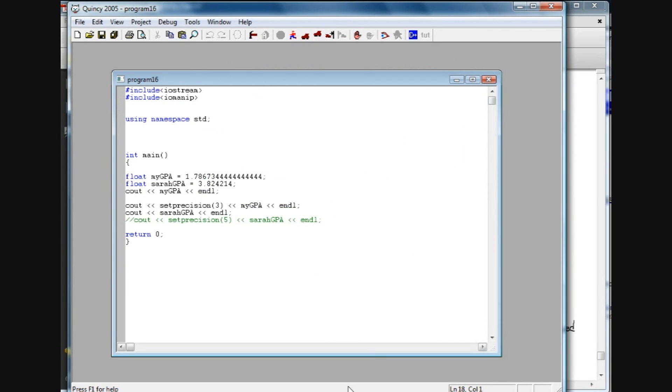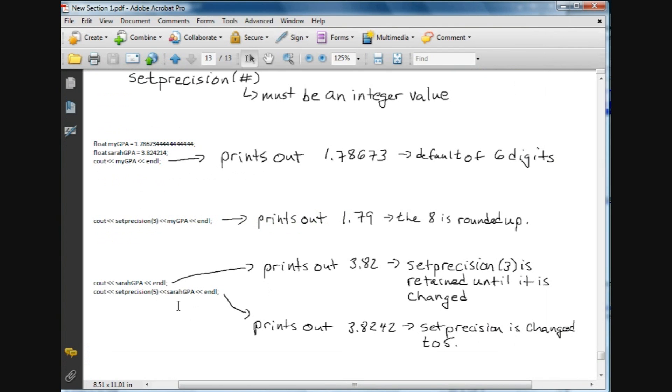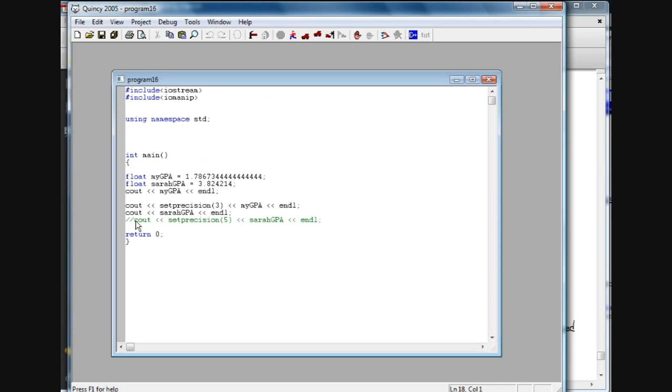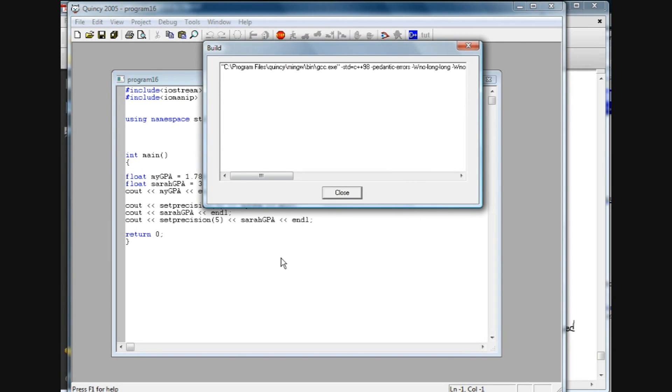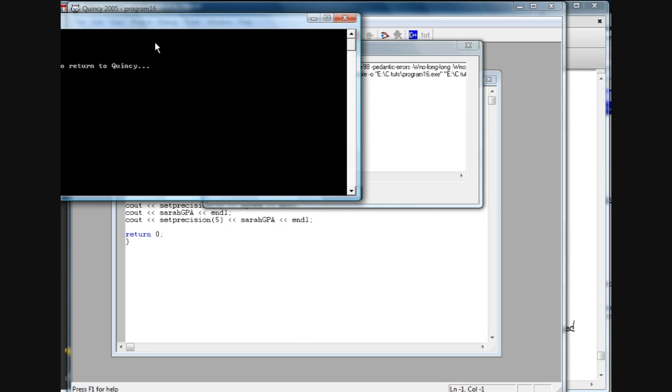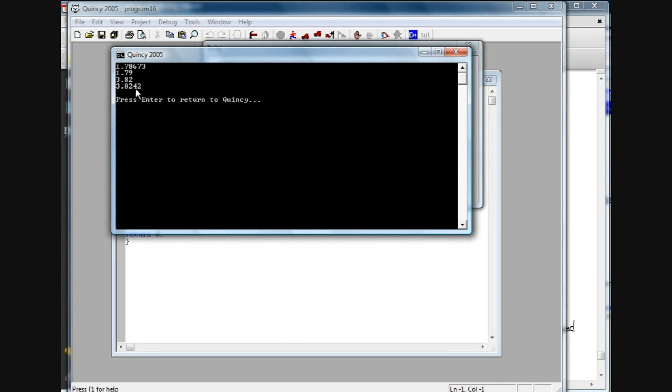So now to change that, it's very easy. All we do is we redeclare that setprecision. So now we are going to C out, and we're going to do another setprecision, and in parentheses we're going to put 5 as the number of digits to be printed out, and then Sarah. And what we're going to get is 3.8242, which obviously is five digits because we've changed the setprecision to 5. So if I run this now, our new output will indeed be five digits, and we'll see the 3.8242.